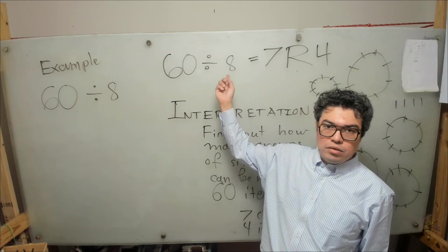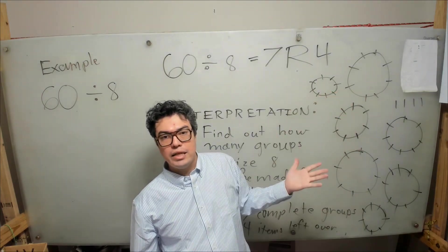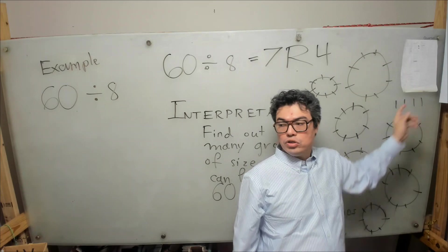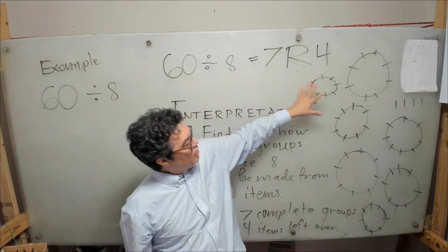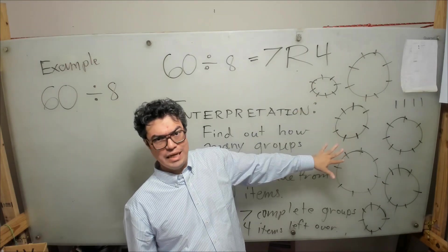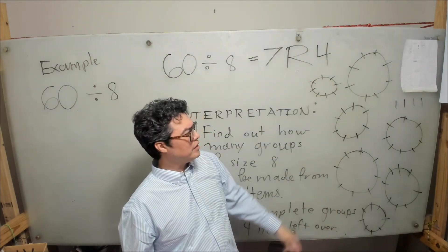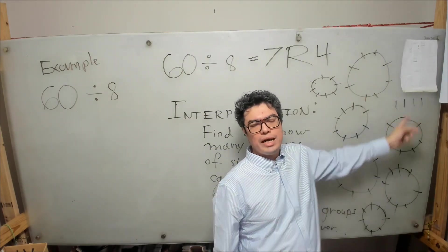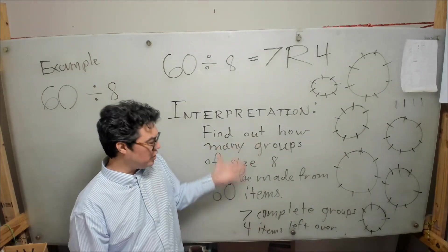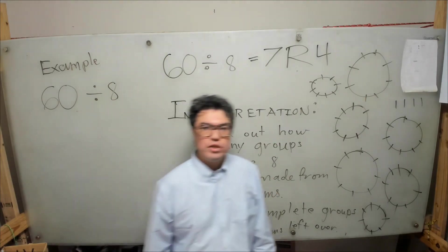60 divided by 8: each of these circles — each table — has eight people, so we have seven complete tables, which comes to 56 people. Then 57, 58, 59, 60 — we have four extra people to complete our 60. There you can see the seven complete groups of eight sitting at seven complete tables, and the four people left over, who would need another table. This visual illustration shows the meaning: seven complete groups of eight and four left over.